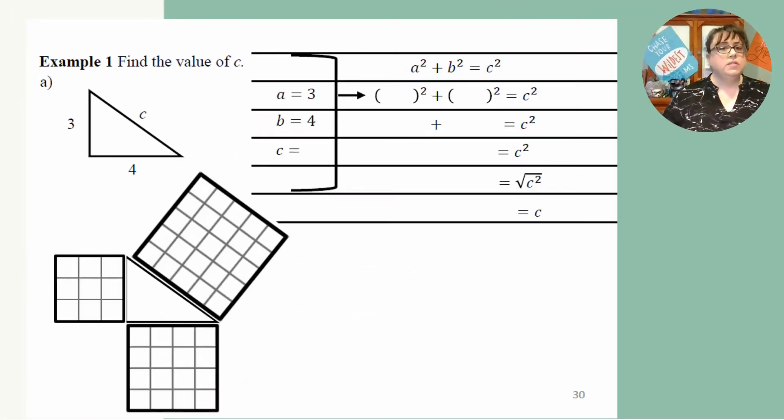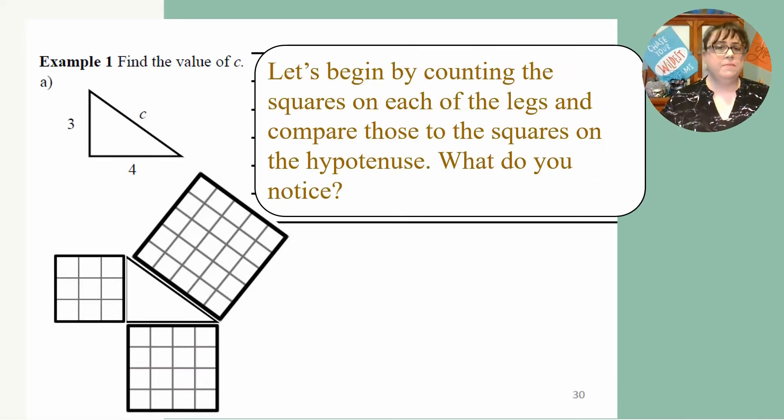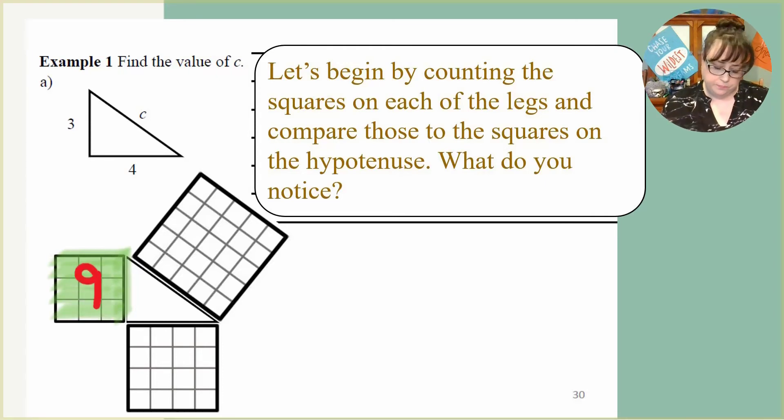In example one, we're going to find the value of C. Let's begin by counting the squares on each of the legs and compare those to the squares on the hypotenuse. So if I look at the very first one, it's a three by three. How many green squares do I have? I have nine green squares. And let's look at the other side. It's a four by four orange. So how many orange squares do I have? Well, four by four is 16, or I can actually count them and I have 16.